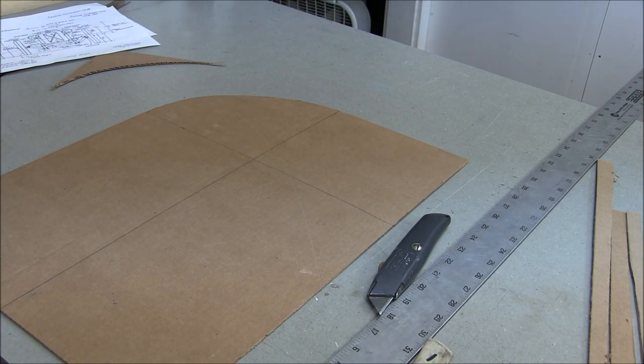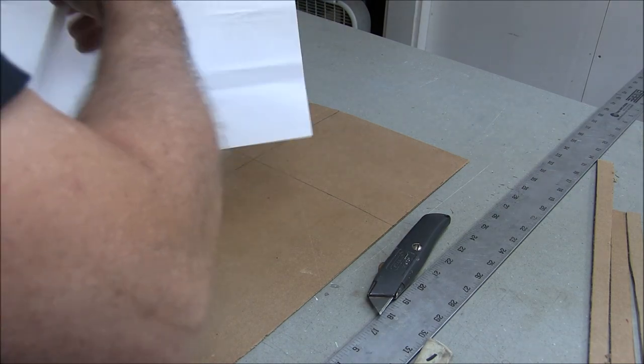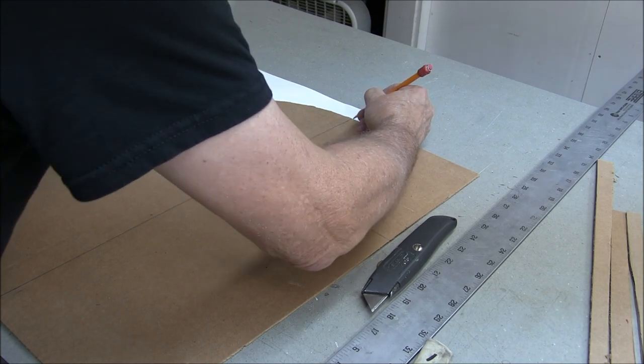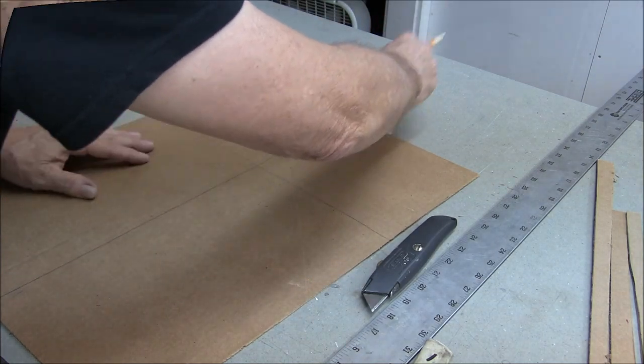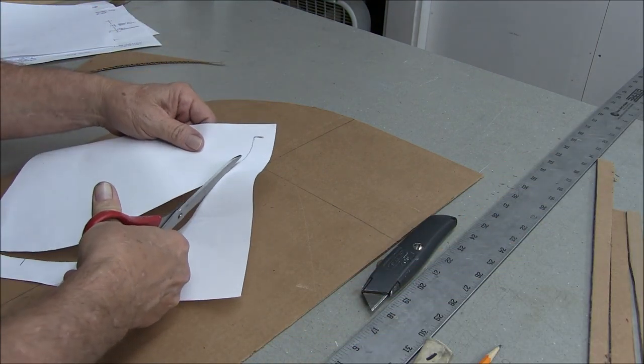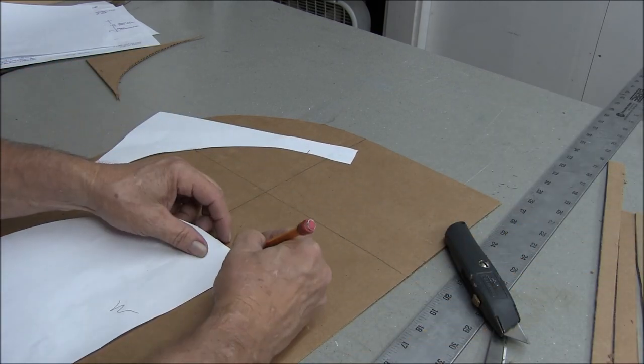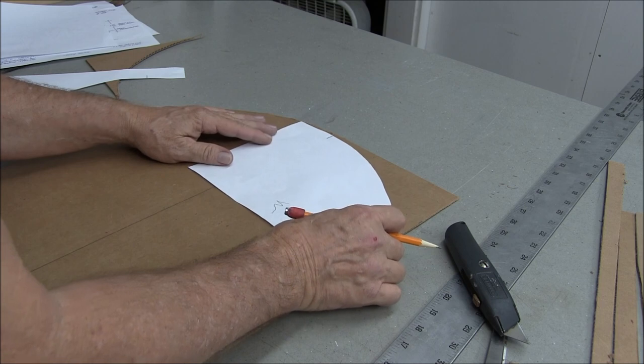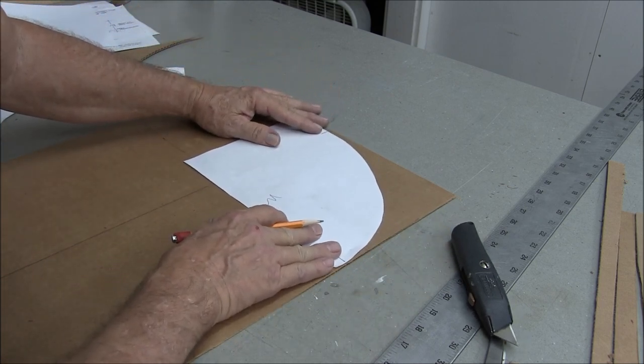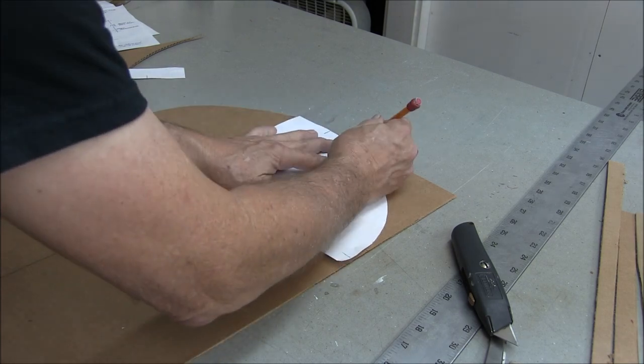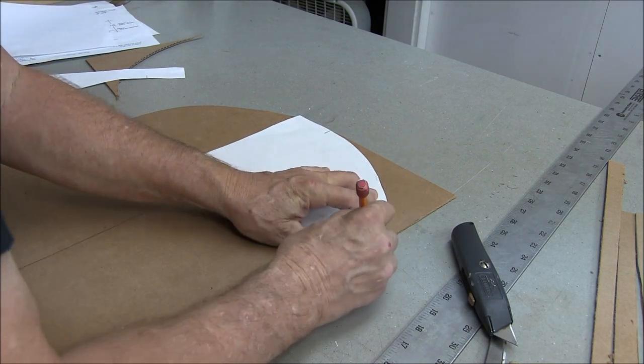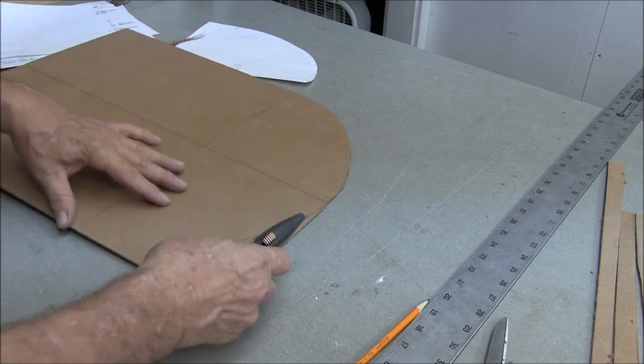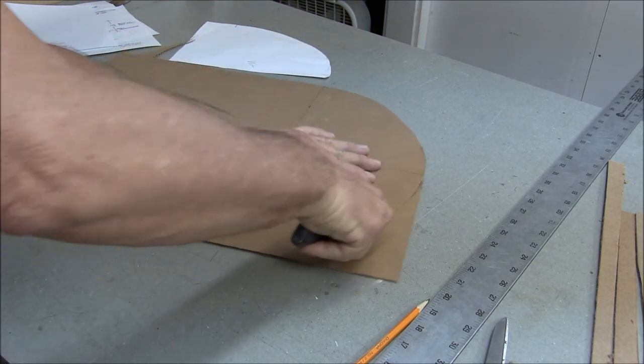So then I take a piece of regular old copy paper, and I put it under here. And I have these two reference lines, so I make a mark here, and I make a mark there, and then I trace it. And then I cut it out. You can see where I'm going with this.